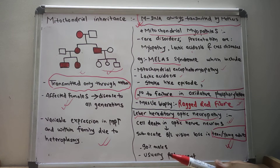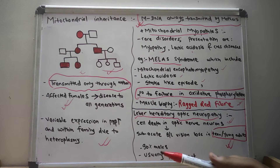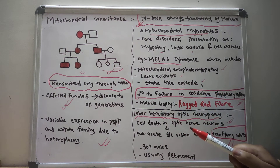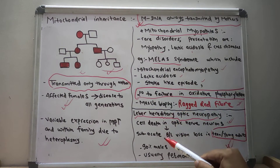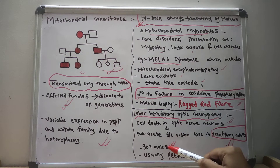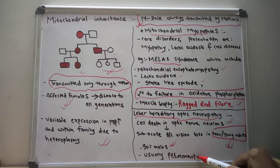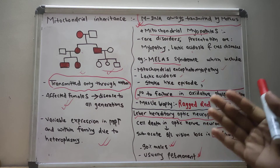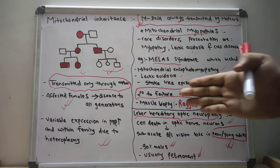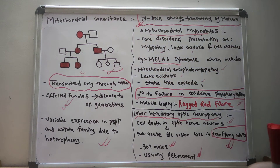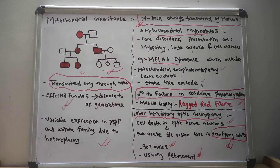Leber Hereditary Optic Neuropathy is a form of mitochondrial inheritance disease. It occurs mainly in males — 90 percent of the affected people are males — and it is usually permanent. You should know the pedigree chart, mitochondrial myopathies, and Leber Hereditary Optic Neuropathy. Thank you.